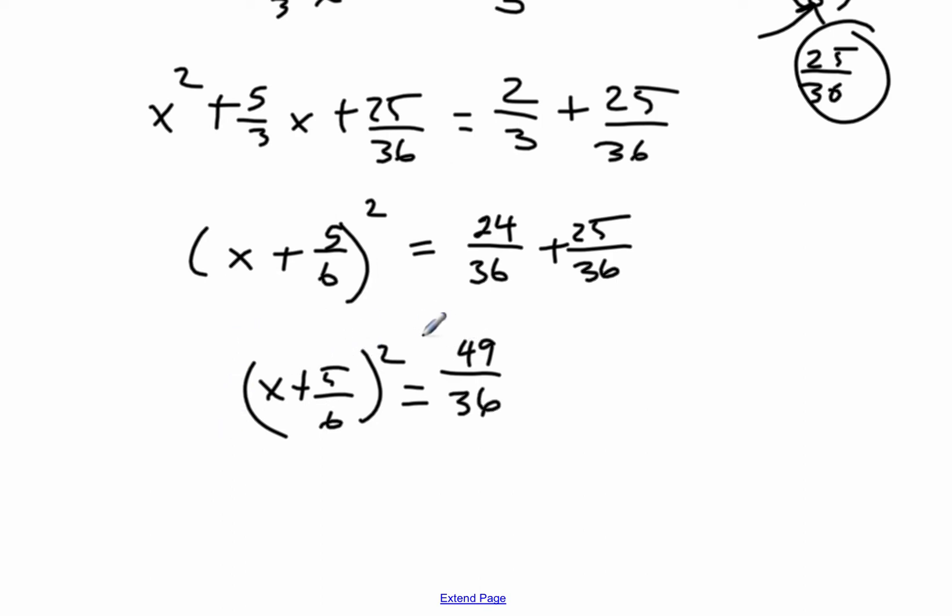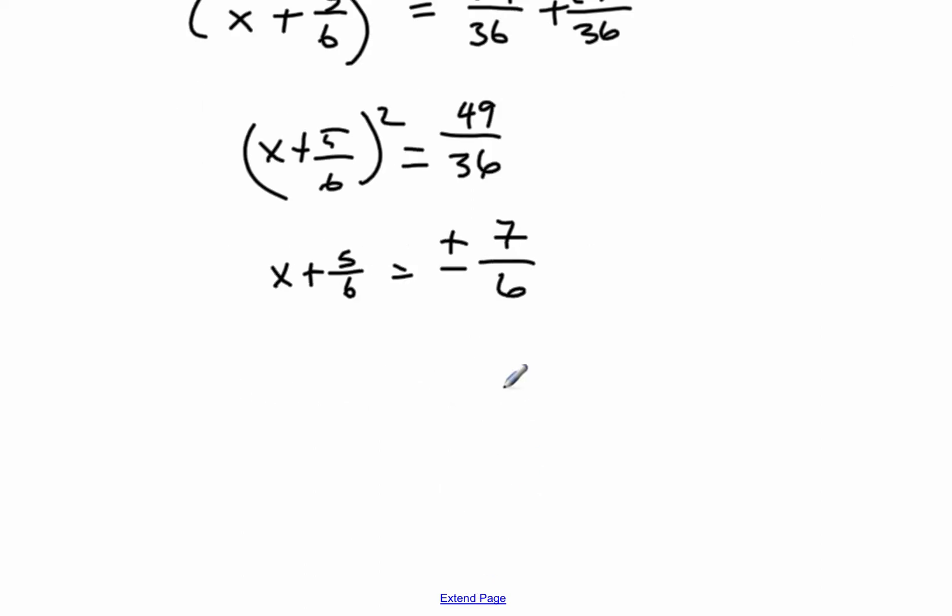Now I can use the square root principle, so I'll square root both sides. So it'll be x plus 5 sixths is equal to a plus or a minus 7 over 6. Because both of those, just by luck, were perfect square roots, or perfect squares.